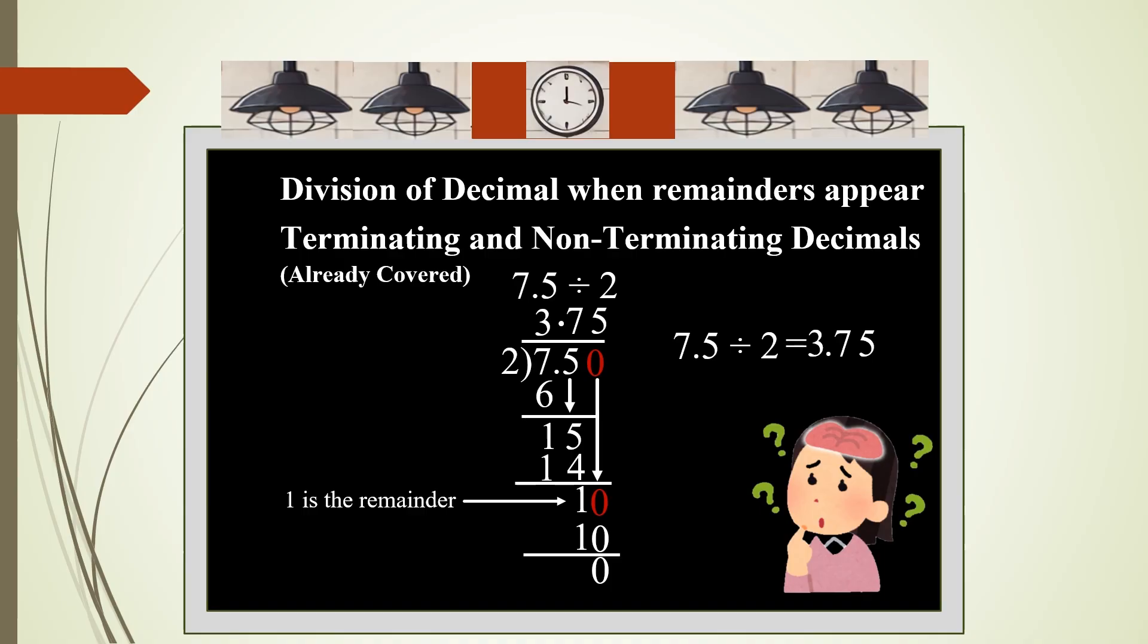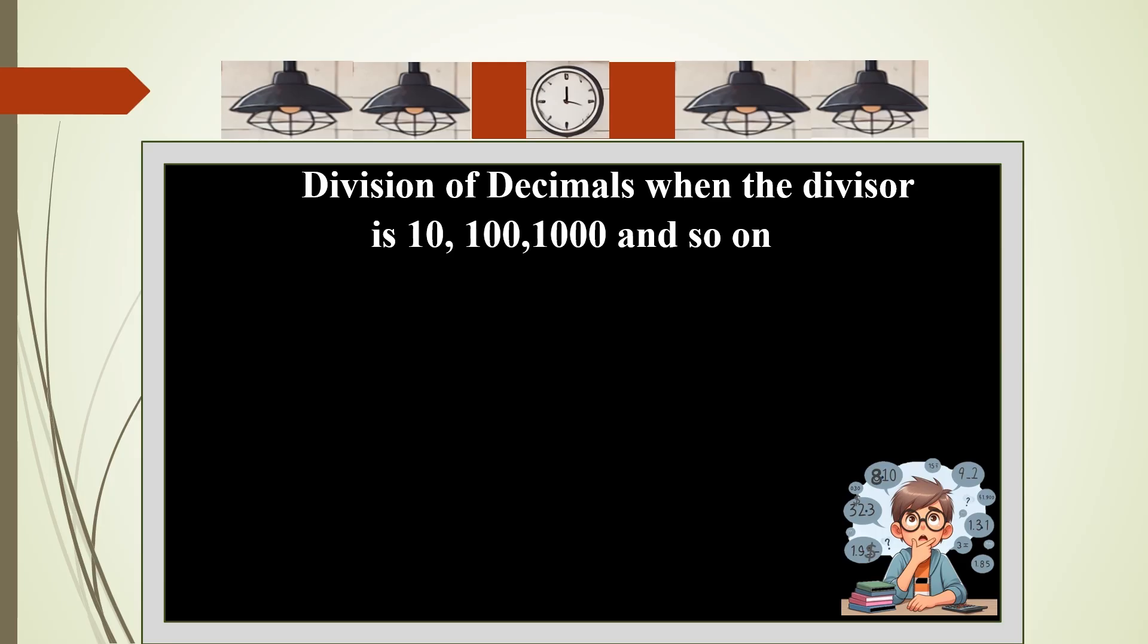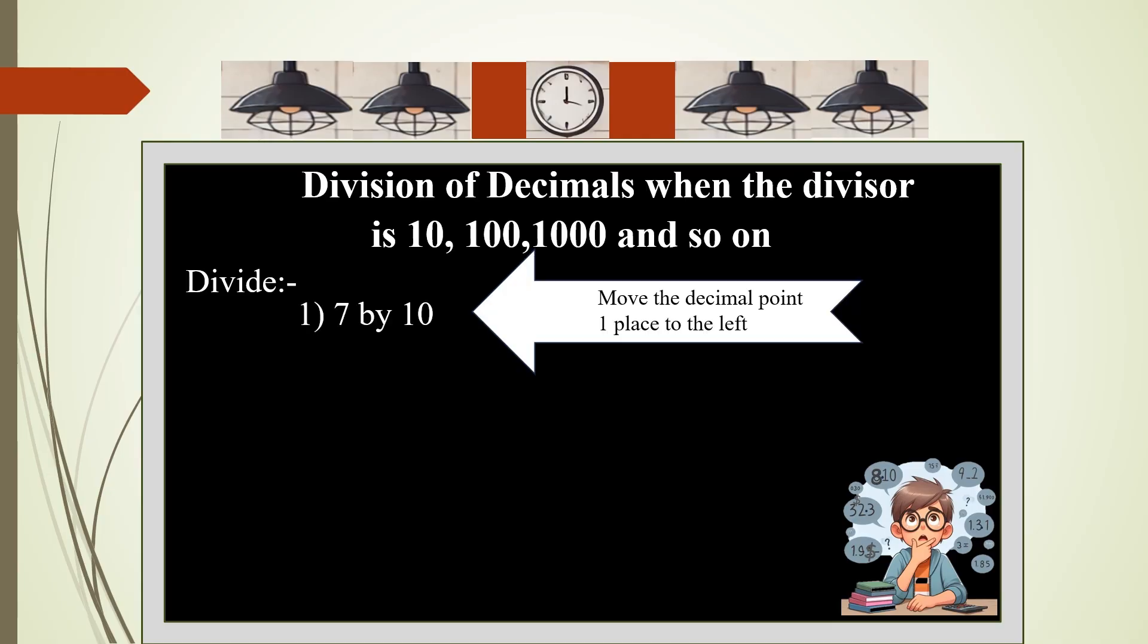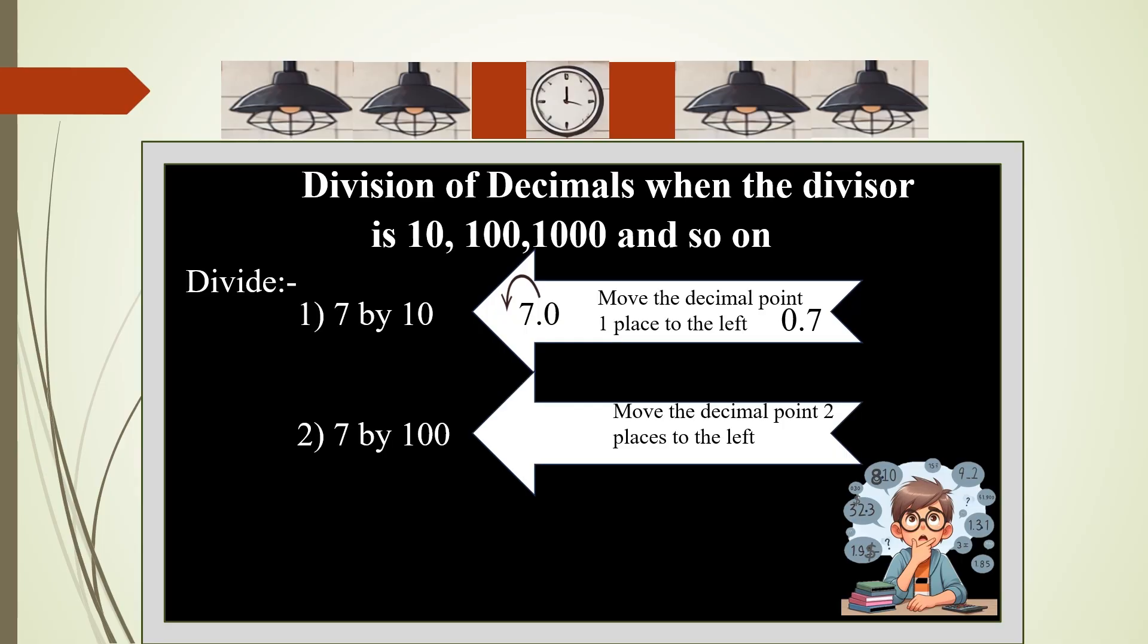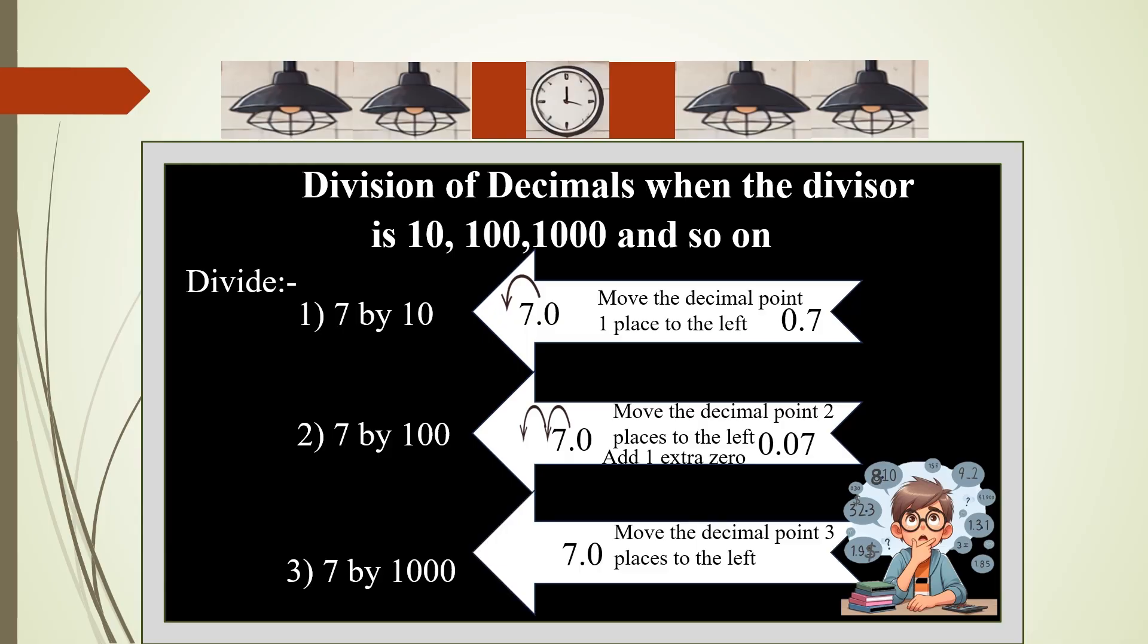Now the last type: division of decimals when the divisor is 10, 100, 1000, and so on. For that, we will take one example. You have to divide 7 by 10. The simplest way is move the decimal point one place to the left, so we get 0.7. Second example: 7 divided by 100. Same way, move the decimal point two places to the left, so you get 0.07. The third one: 7 divided by 1000. Move the decimal point three places to the left—1, 2, 3. You will have to add 2 extra zeros and we get the answer 0.007.